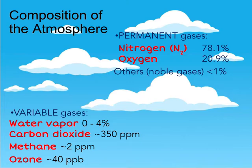The composition of the atmosphere: we have permanent gases and variable gases. For the permanent gases, we have nitrogen and oxygen. Nitrogen is the most abundant, making up about 78% of the atmosphere. Oxygen — the part we actually use — is about 21%. All the other noble gases make up a little less than 1%. The variable gases change, and humans have impacts on them. Water vapor is between 0 and 4% of the air, depending on humidity.